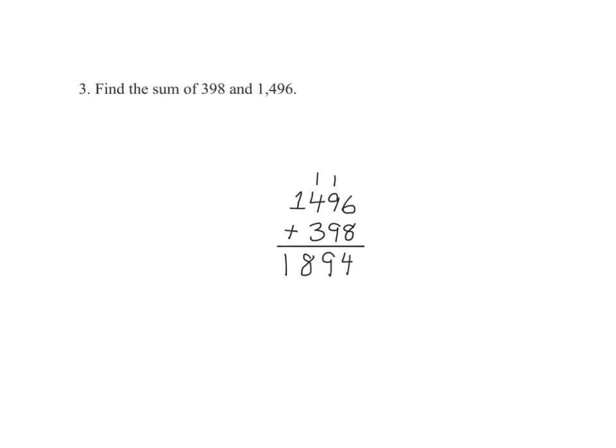Therefore, the sum of 398 and 1496 is 1894.